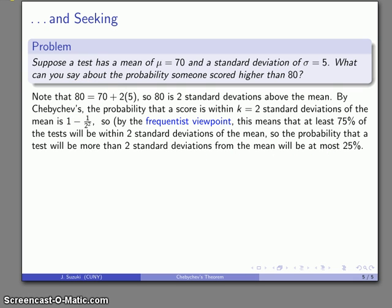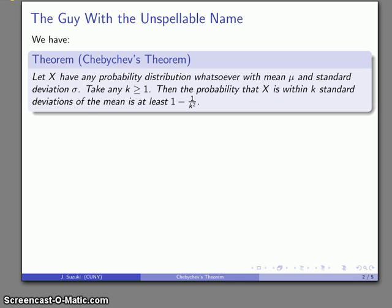Now, the thing to remember about Chebyshev's is that it applies to any probability distribution whatsoever. The only thing we know, the only thing we need to know, is the mean and the standard deviation. If we know nothing else, we can still apply Chebyshev's. Now, a little bit later on, we'll start to look at more specific distributions, but Chebyshev's is a good fallback position. If you know nothing else, you can apply Chebyshev's. If you do know something else, you probably want to apply that because it'll give you more precise results.